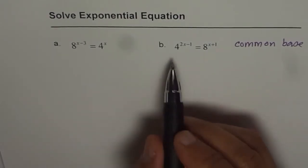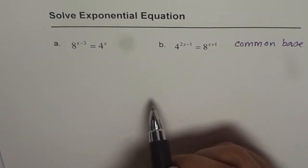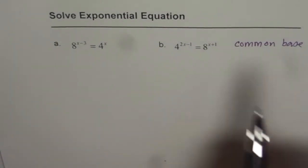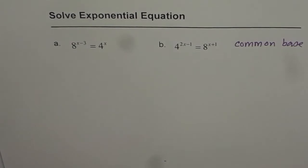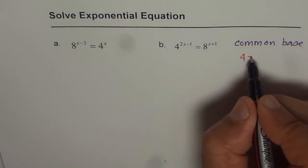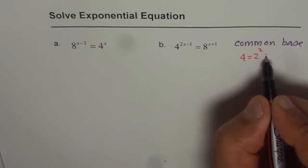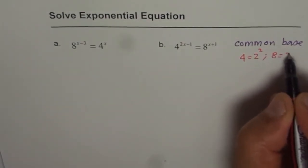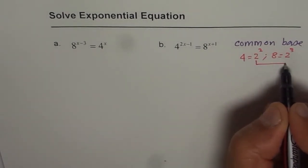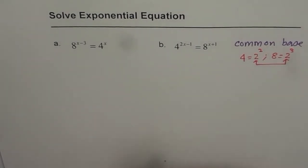As you can see here, 4 could be written as 2 squared and 8 can be written as 2 cubed. So that is the strategy. We can write 4 equals 2 squared and we can write 8 equals 2 cubed. Then I will have common base of 2. Do you see that? This is the strategy which we are going to adopt to solve this equation.